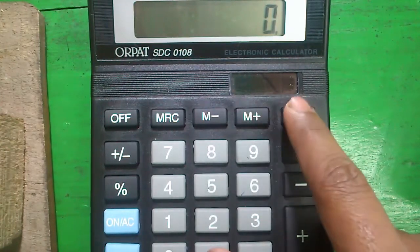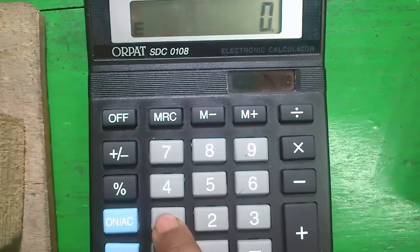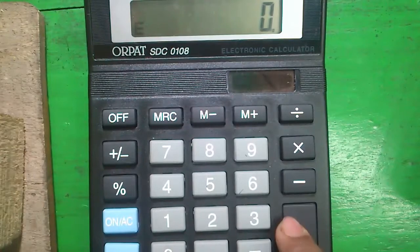So for that, just press the divide and the M+ button and it will be hacked. See, any button is not working thereafter.